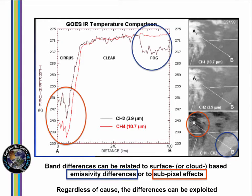Brightness temperature detection of water-based clouds works because water-based clouds are not black body emitters of 3.9 micron radiation. The conversion of satellite detected radiance to temperature assumes that an emitter is a black body. For the case of 3.9 micron radiation above a water-based cloud, where the amount of radiation detected will be less than that emitted by a black body, the inferred temperature is cold.